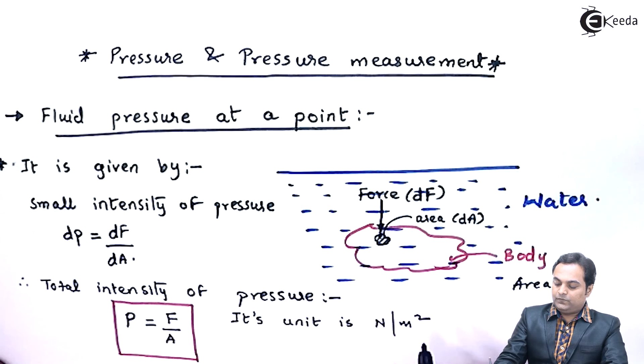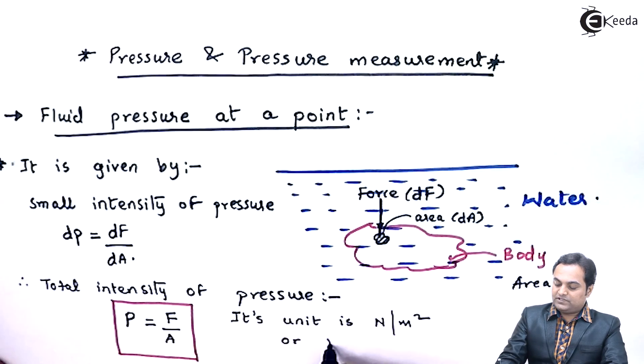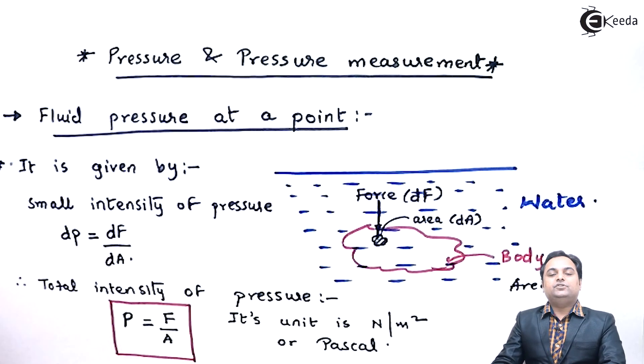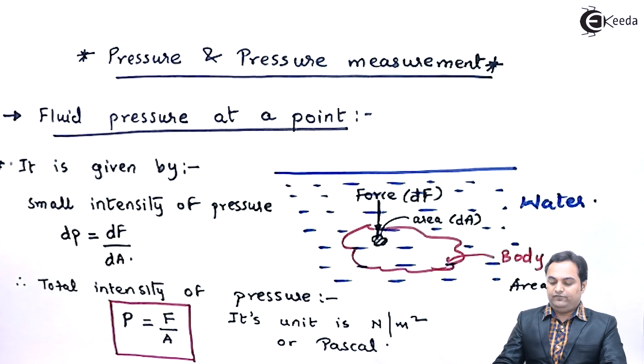The unit of intensity of pressure is Newton per meter square or Pascal. So from this video we have understood what is the meaning of fluid pressure acting at a point, how it is denoted, and what is its unit.